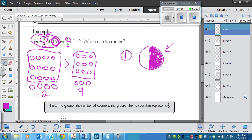Same rule applies here. If this number right here is larger, then the fraction of it is also going to be larger. So the rule is the greater the number of counters, the greater the number that represents 3 quarters. So this has a larger total number of counters, so that means it's a larger representation.